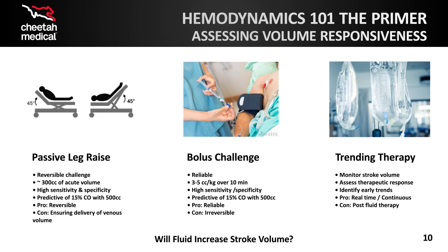Instead of a passive leg raise, 250 to 300 cc of IV fluid can be rapidly bolused over 5 to 10 minutes as a direct fluid bolus test to assess the ventricle's ability to respond to additional fluid. This test is reliable, and if positive, is highly predictive that an additional fluid bolus of 500 cc will result in increased perfusion by increasing the cardiac output by 15% or more. Additionally, trending therapy will allow a clinician to monitor stroke volume, assessing the therapeutic impact of volume and or pressors, and identify early trends during patient care. Is the stroke volume trending up or down? If additional fluid is being bolused, is stroke volume increasing? Is perfusion being improved? Is the patient fluid responsive?